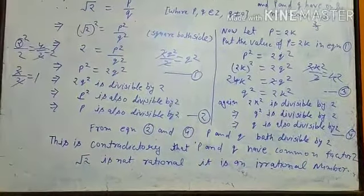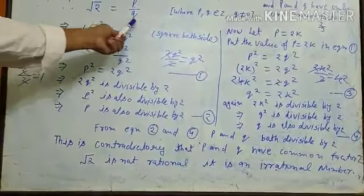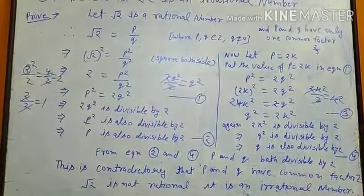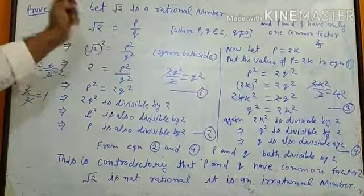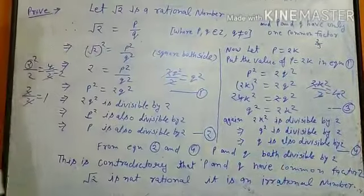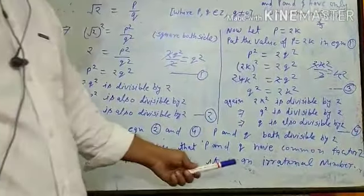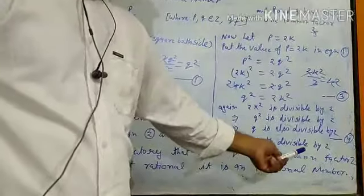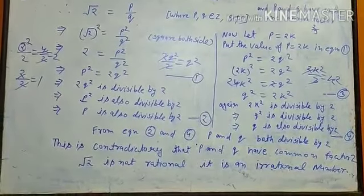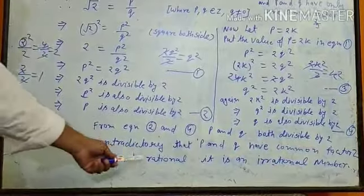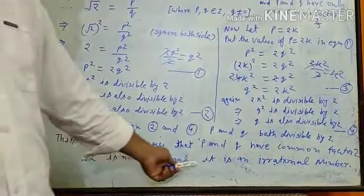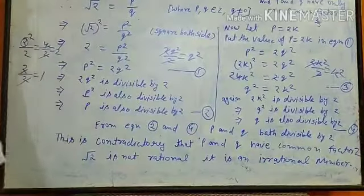But this is a contradiction. Why? Because we assumed that p and q have only one common factor, which is 1 — that is the definition of a rational number. But we have proved that p and q have a common factor of 2. This is contradictory, so our assumption is wrong. Therefore root 2 is not a rational number — it is an irrational number.